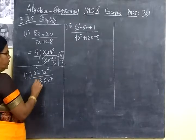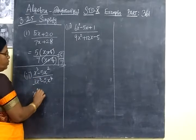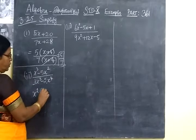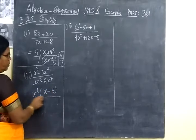Next, x cube minus 5x square. So in the numerator, you can take x square outside. So x minus 5, right?